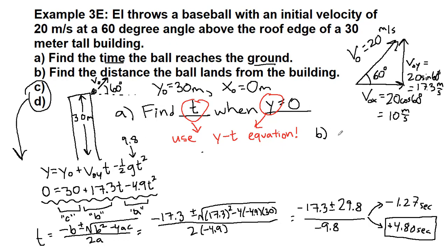Part b, similar to the previous two examples, isn't very many steps. We're finding the distance the ball lands, so we're finding x when t equals 4.8 seconds. We use the xt equation: zero plus 10 times 4.80 means we get 48 meters for our answer.